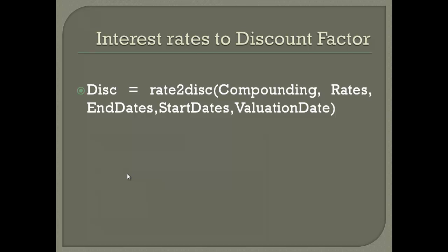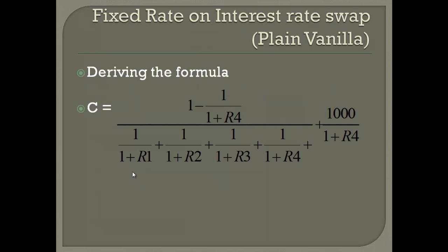To use the function, we need to input compounding, rate, and start date or valuation date. We are dealing with all of these as matrices and arrays. On the right-hand side we have a matrix of rates and start dates — the valuation date would likely be a single-element matrix. The function converts all of these inputs into discount factors.